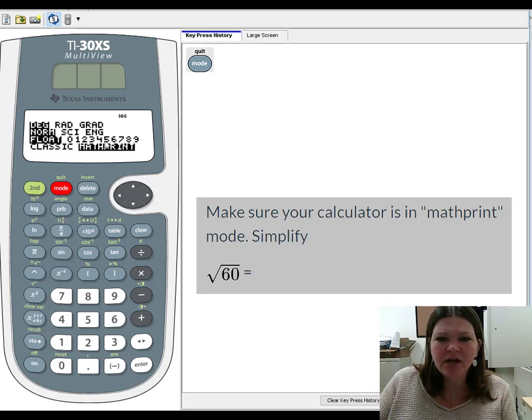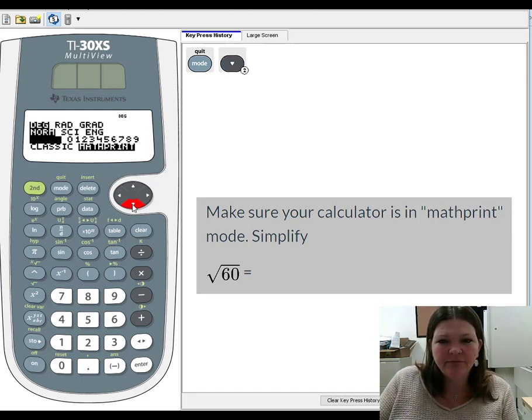So let's practice. What you're going to want to do first is make sure you're in math print mode. So let's hit the mode button. You can see here is my mode screen. Notice that the word math print on my screen is already black, so my calculator is already in math print mode. But what if yours was not? All you would do is use this arrow key here. Here's how you arrow around on the screen with this big round gray key. I'm going to go down to that last line and over to the word math print, and then I'll press enter to select it. That's how I make sure I'm in math print mode.